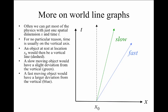A fast-moving object would have a larger deviation from the vertical dotted line because it makes a bigger excursion in the x direction in a shorter amount of time in the t direction. So again, because we've drawn t on the vertical axis, this might be a little bit unusual from what you're used to.